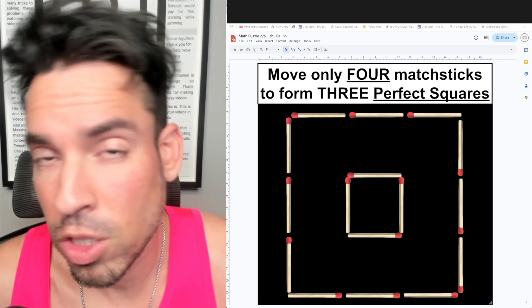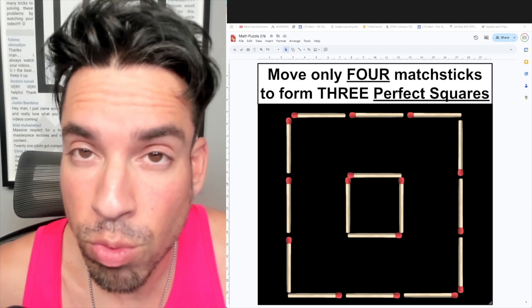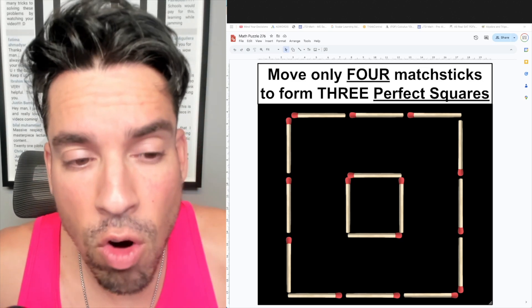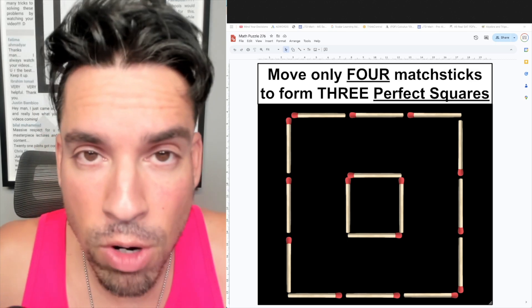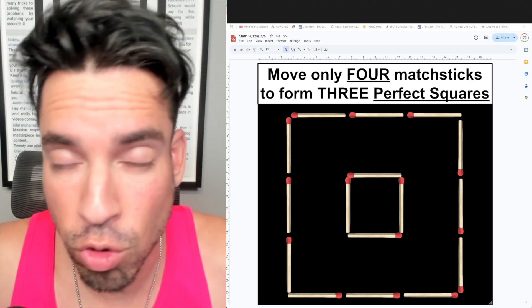It's not just form three perfect squares and have leftover matches. We want three perfect squares and no match going unused, so everything needs to have a function and a form. We don't want just to have matches strewn about.